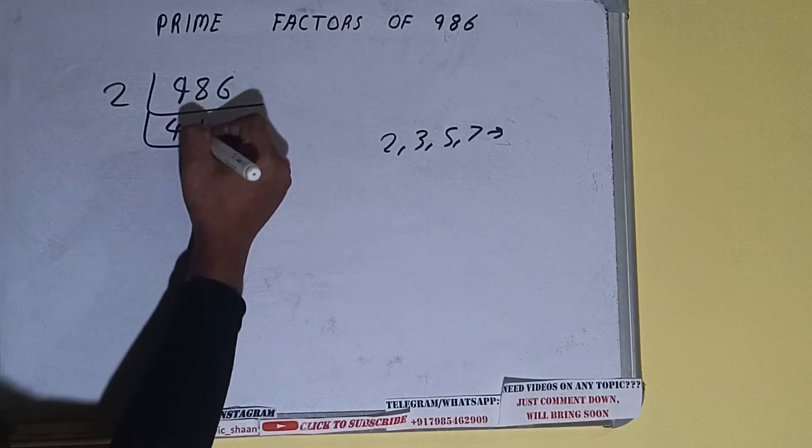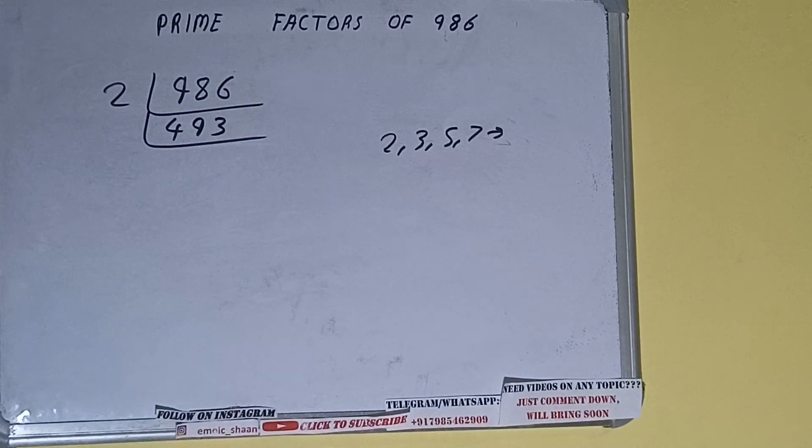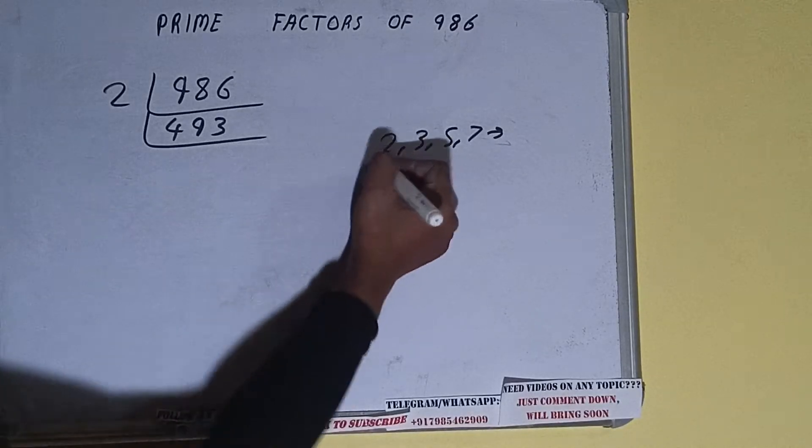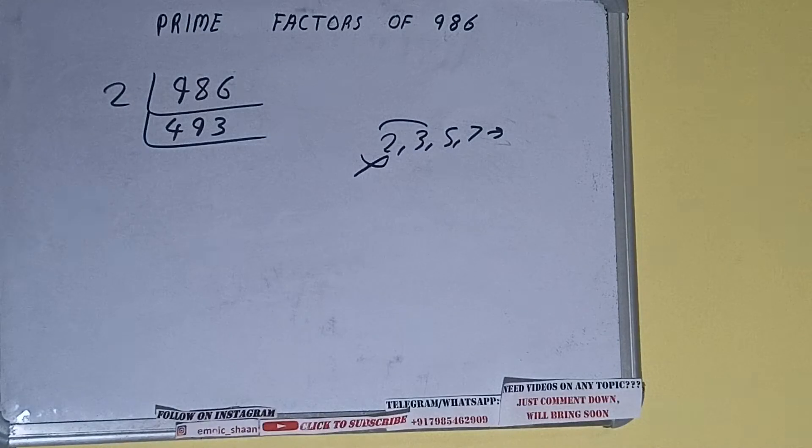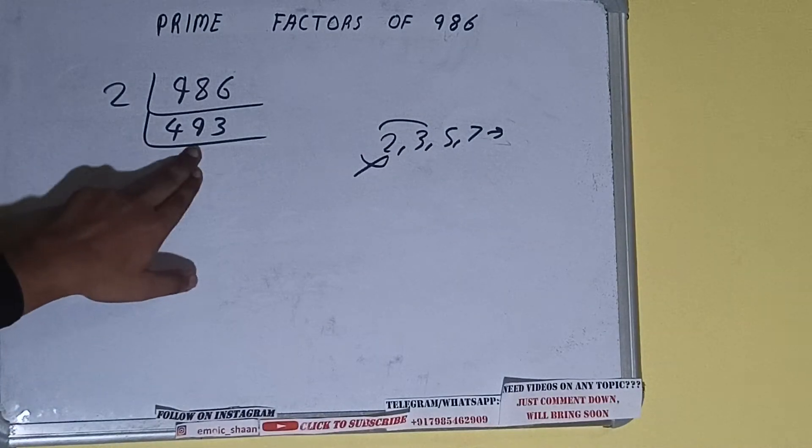So we'll check with the next lowest prime number, that is three. Three ones are three, one nine, three sixes are eighteen, one three... it is not divisible by three also. Let's check with five. The last digit is neither five nor zero, so it is not divisible by five also.